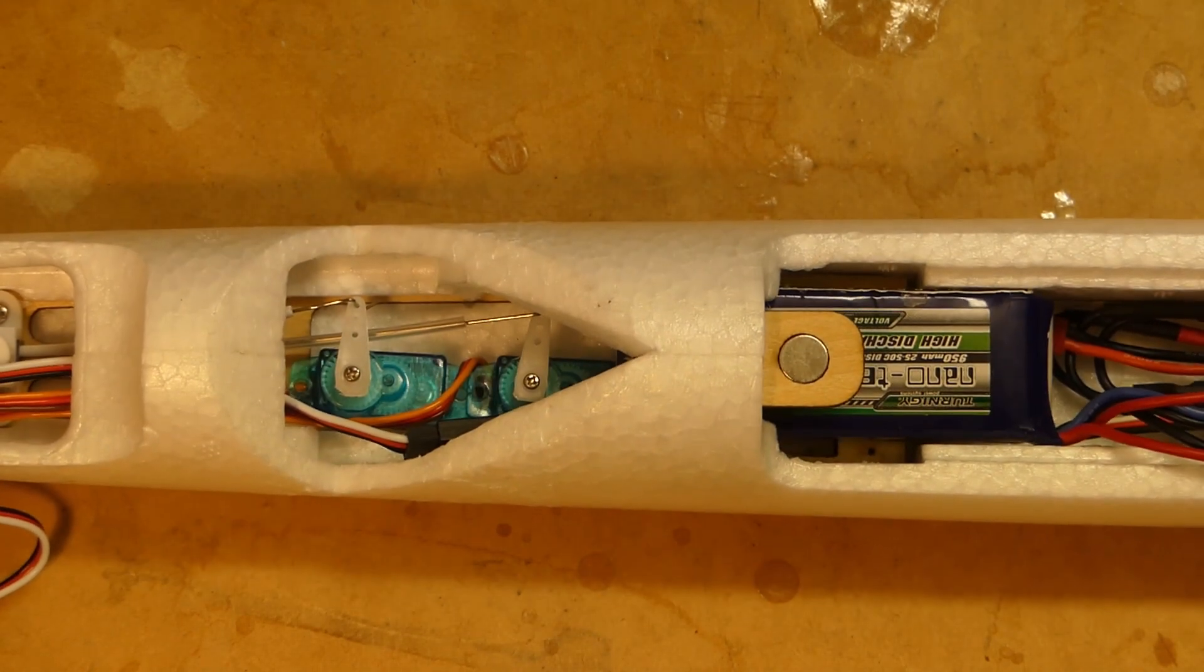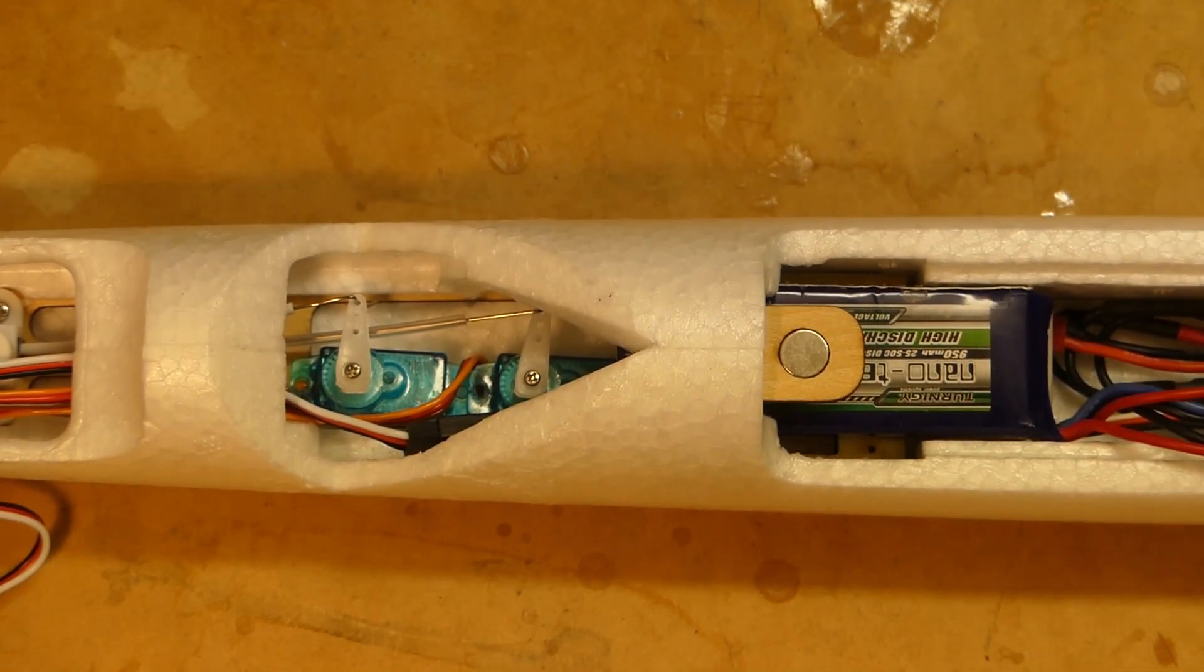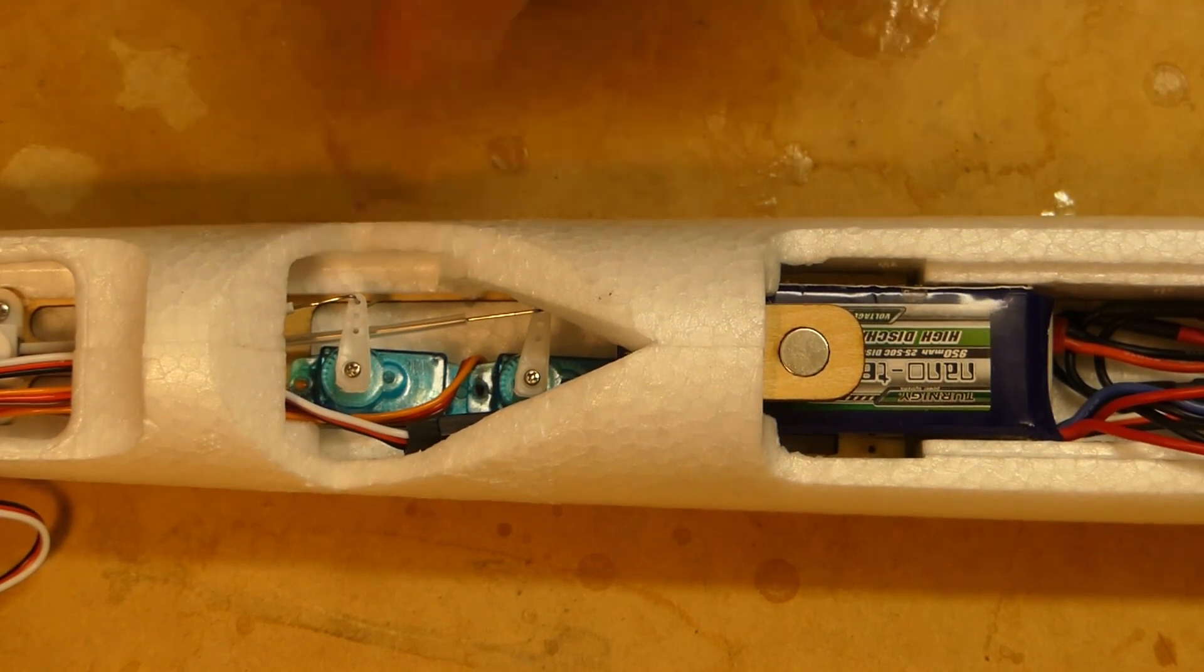This means that they sit quite low which means that the control rods are much straighter which is crucial to get the servos to work well.